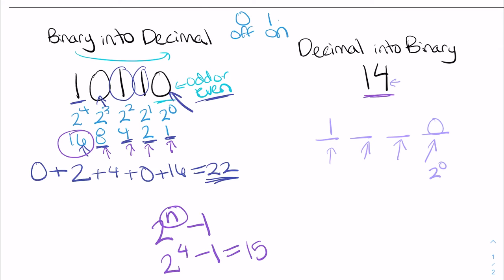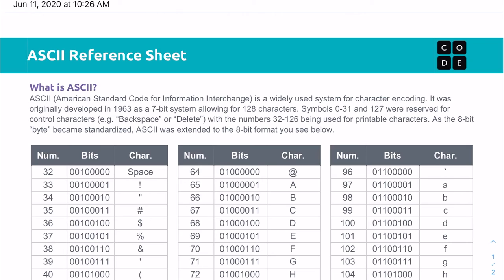For two to the first, two to the second, and two to the third — we know that we have an eight, plus zero. We're missing six, so we need a one and a one. We have 14.